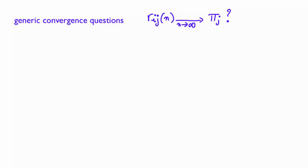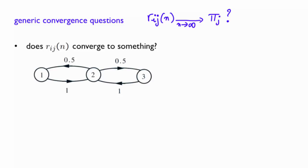Consider the first question: does Rij of n always converge to something as n goes to infinity? Look at the following simple Markov chain.